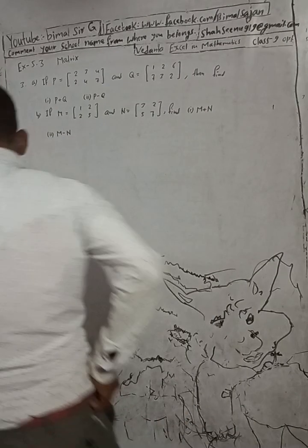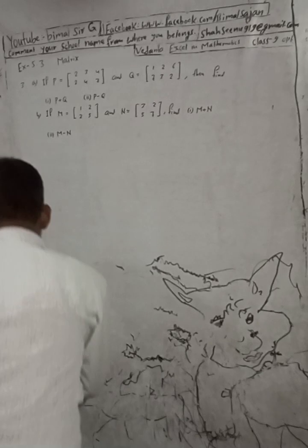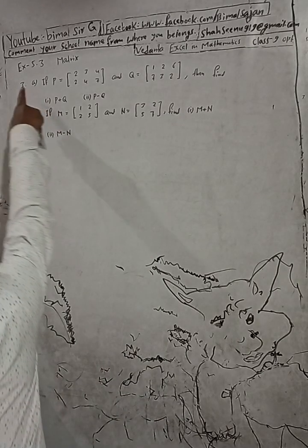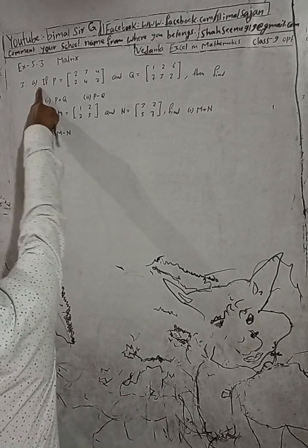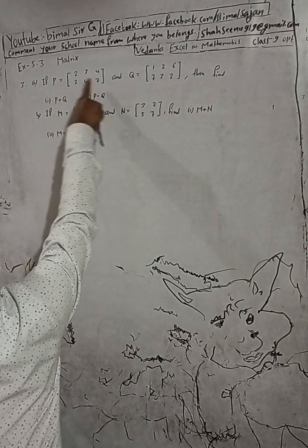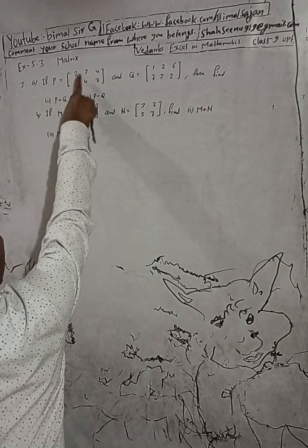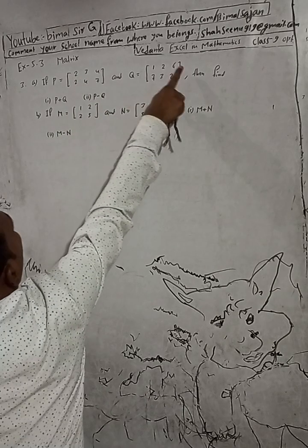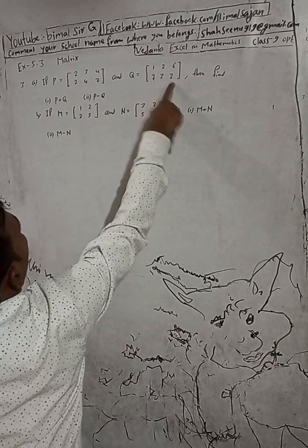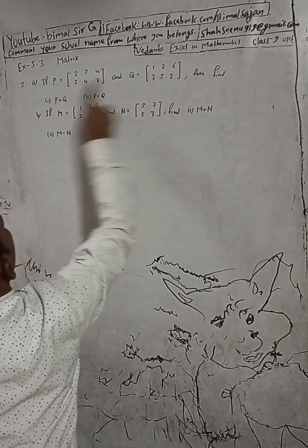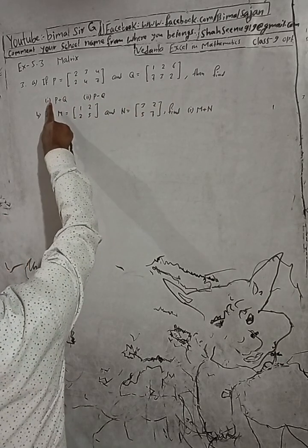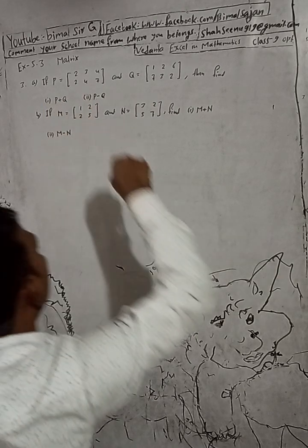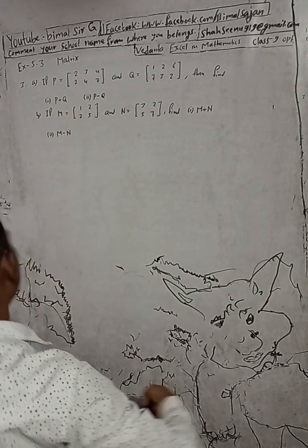The question is here, 3A: if P is equal to [2, 3, 4 / 2, 4, 7] and Q is equal to [1, 2, 6 / 7, 3, 2], then find number 1: P plus Q, and number 2: P minus Q.